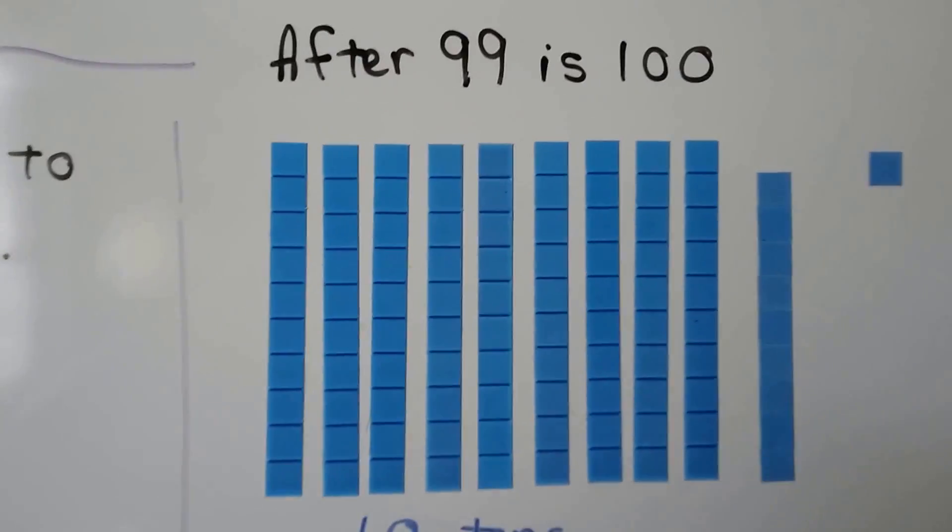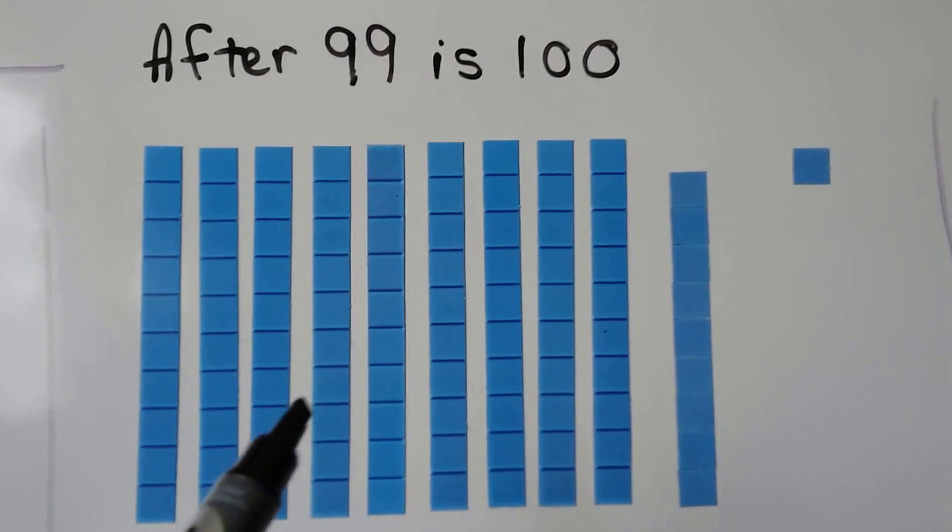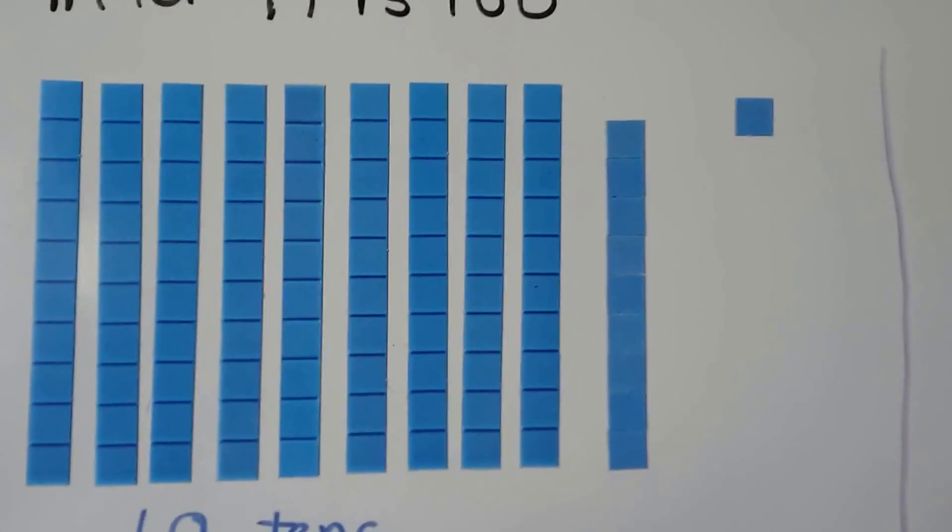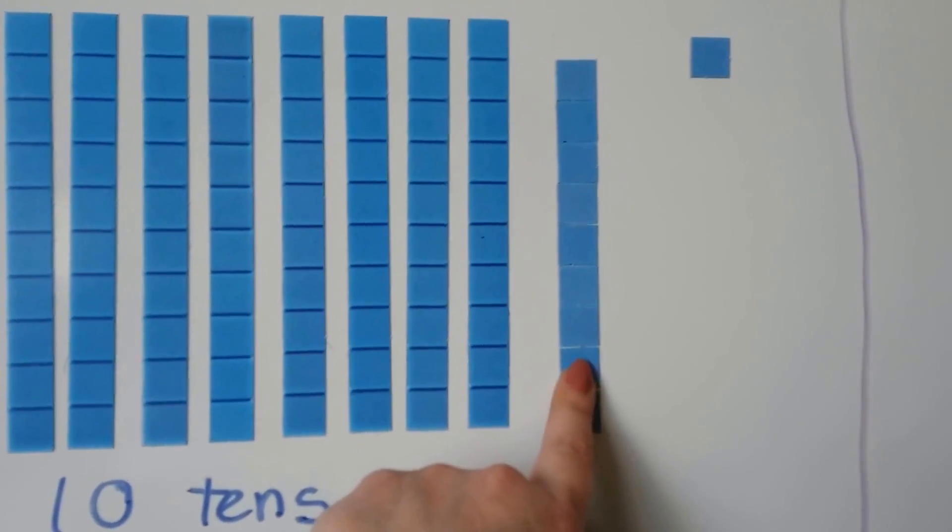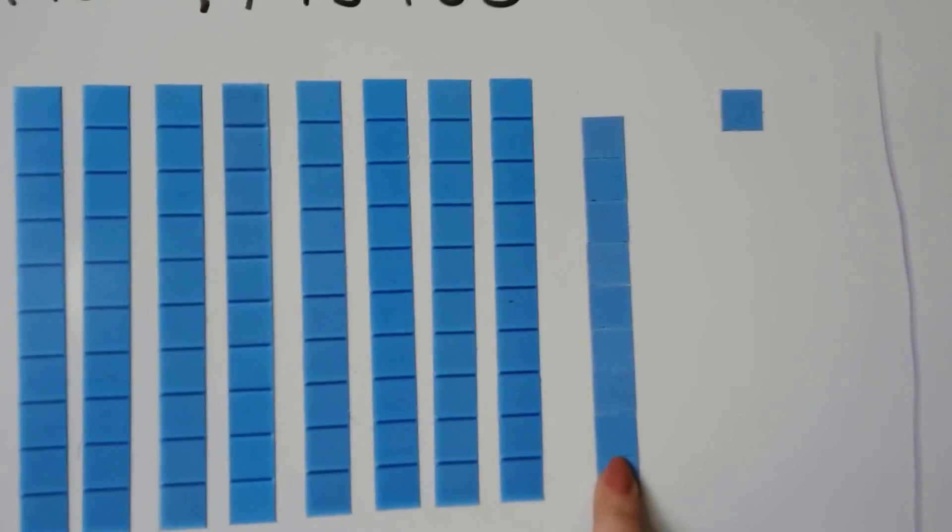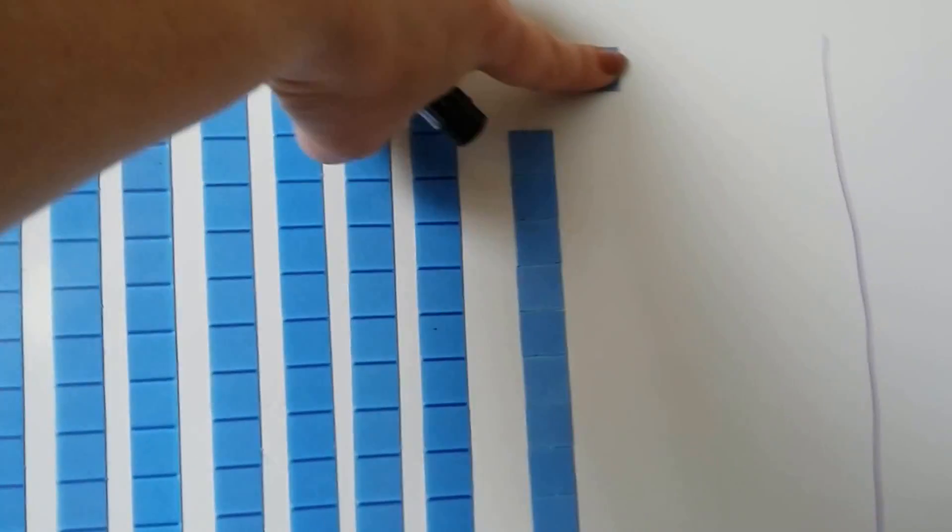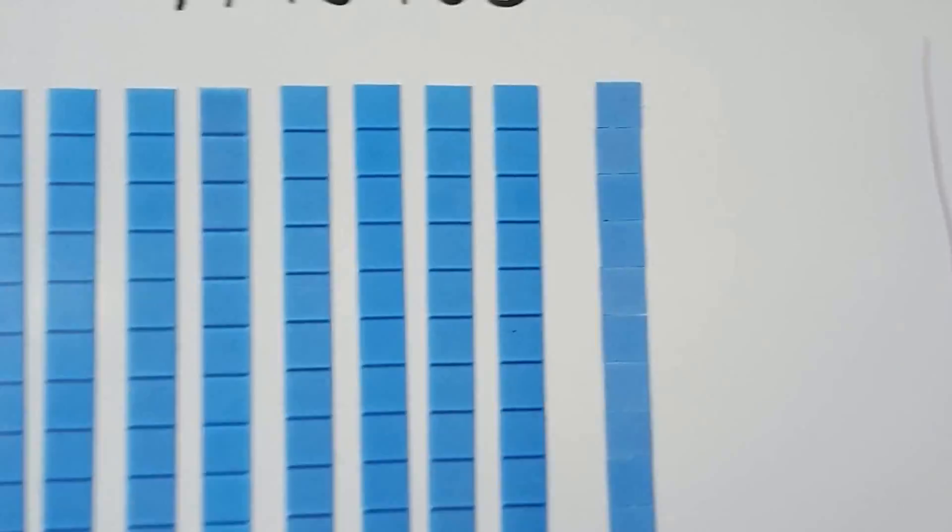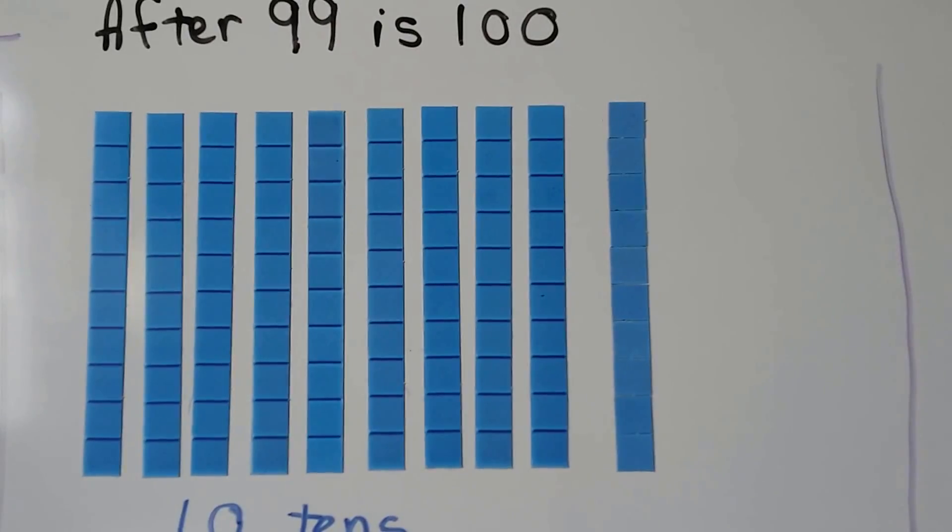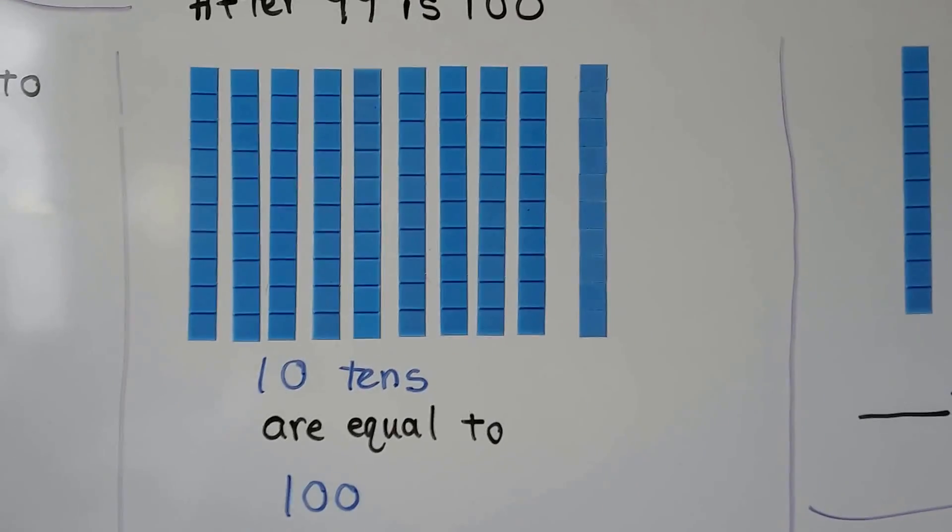After 99 is 100. Here we have 1, 2, 3, 4, 5, 6, 7, 8, 9 tens, and we have 1, 2, 3, 4, 5, 6, 7, 8, 9 ones. That's 99. If we add one more unit, we'll make a rod of 10 and we'll have 10 tens. Ten tens are equal to 100.